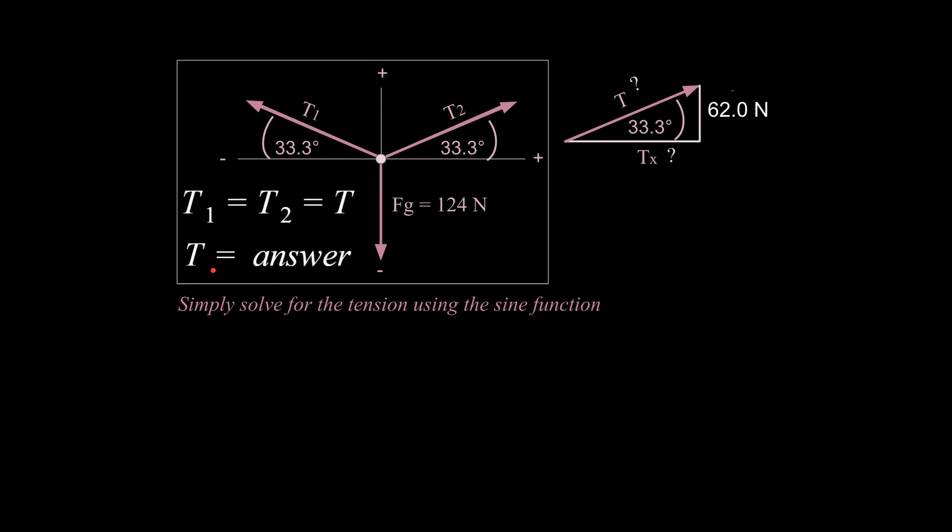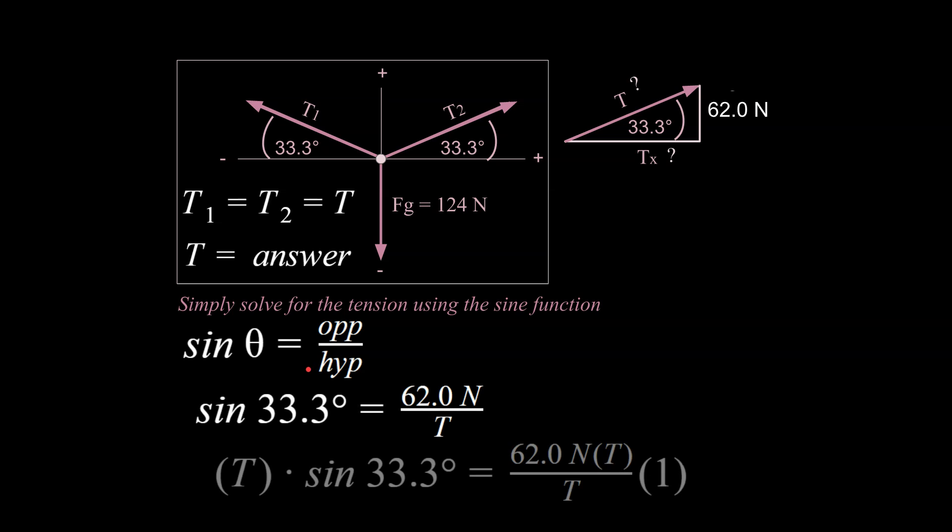We're looking for one of these tension values. And so we can go ahead and use the sine function here. Sine because we know this angle. We want to get the hypotenuse. And we also know the opposite leg of the right triangle. So the simple trig function that uses opposite and hypotenuse is going to be sine. And so we start with that. We can plug in our numbers and start to solve.